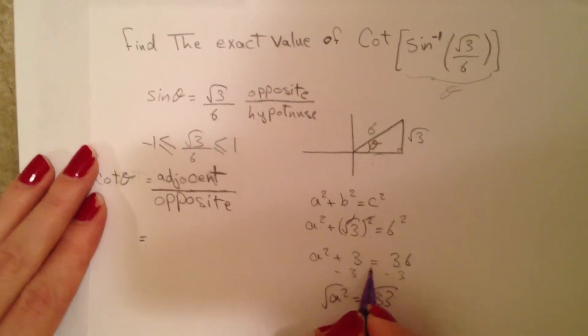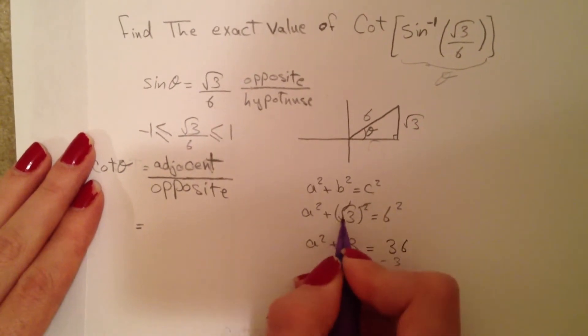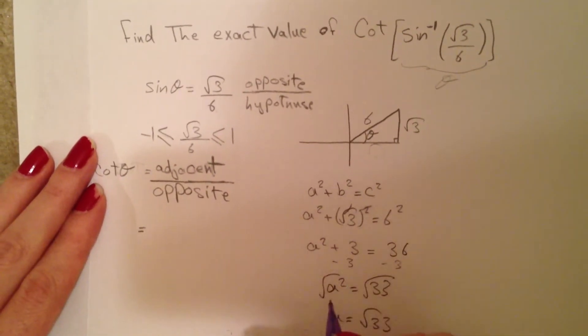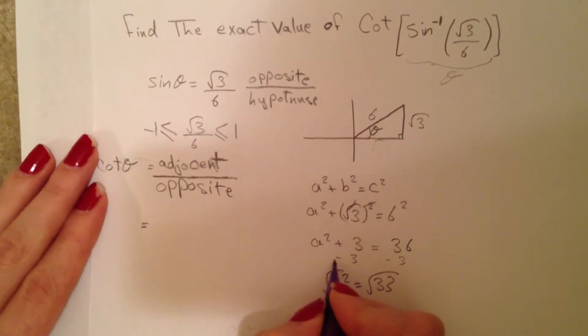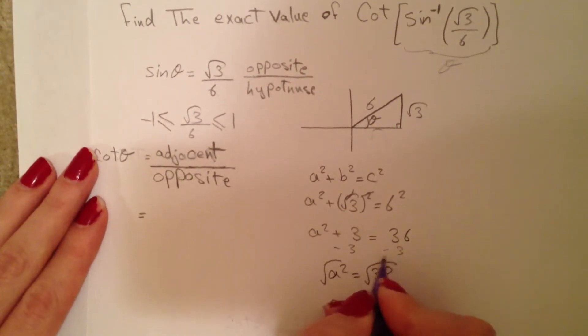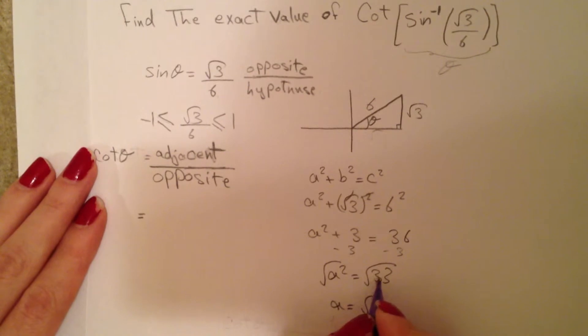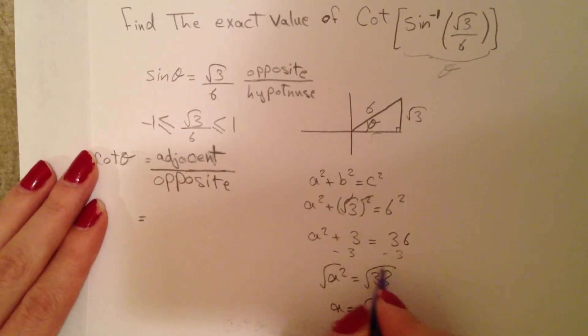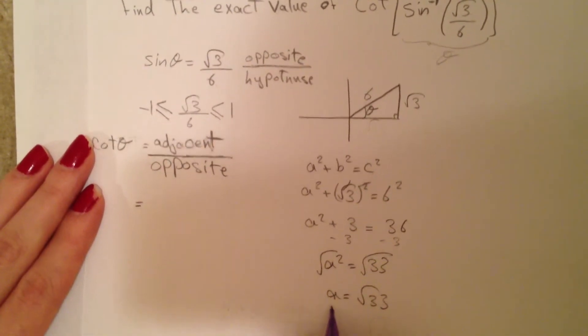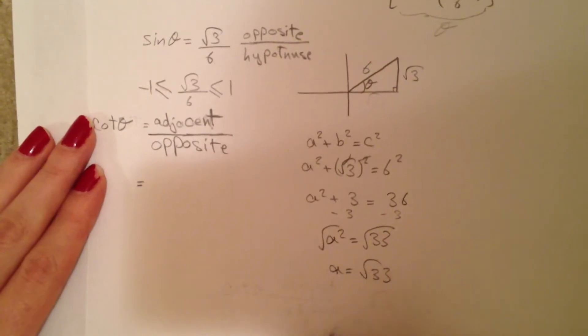a² + 3 = 36 because we cancelled the square root with the square. Then I subtract 3 from both sides to get a² = 33, and then square root both sides. So a = √33.